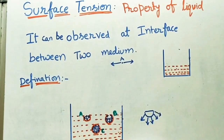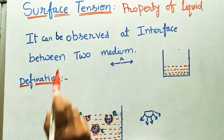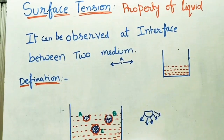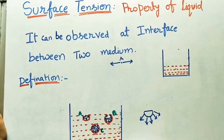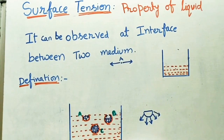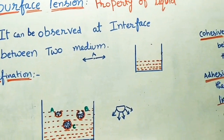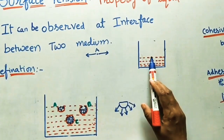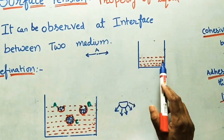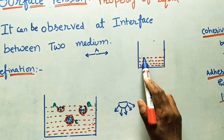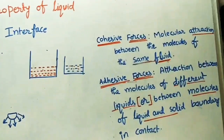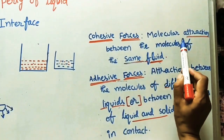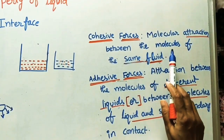Surface tension is a property of the liquid. Before taking the definition of surface tension, I will explain what cohesive forces and adhesive forces are. These cohesive and adhesive forces are molecular attractive forces — attractions between molecules. If the attraction is between molecules of the same liquid, it is called cohesive force. For example, taking water: cohesive force means molecular attraction between molecules of the same liquid.